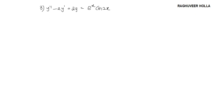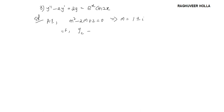Let us move on to the next problem. This is again a second order differential equation and it is non-homogeneous. The auxiliary equation corresponding to this is m squared minus 2m plus 2 is equal to 0. It is a quadratic equation with roots 1 plus or minus i. The complementary function yc is e to the power of x times (c1·cos x plus c2·sin x).